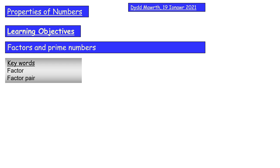We're going to look at factors and prime numbers. Let's make some notes, get our lesson objective and keywords down. Hit pause to do that now, then write 'starter' on the line when you're ready, and then click play to look at the starter.